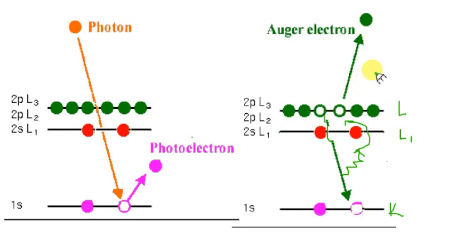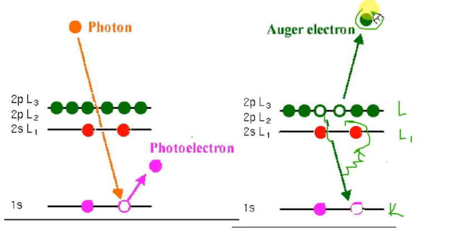This ejected electron is known as the Auger electron, and this phenomenon of its ejection is known as the Auger effect. In the Auger effect there is the involvement of three electrons: first, ejection of the photoelectron; second, falling of the electron to fill the hole; and third, ejection of the Auger electron.